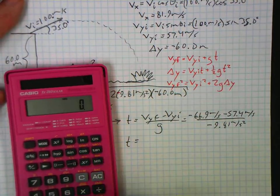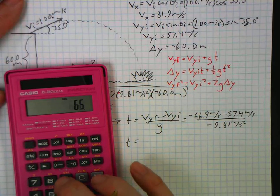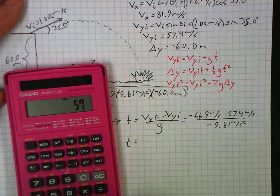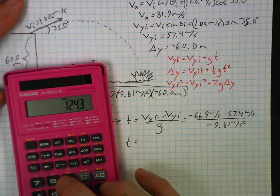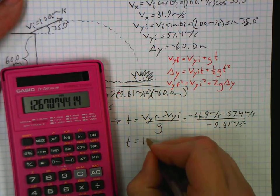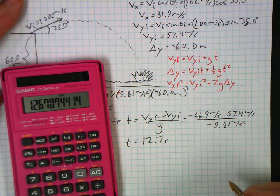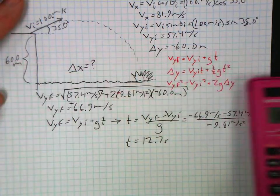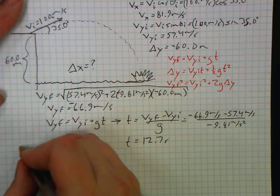So I didn't imagine things—it's not going to be an imaginary number or anything weird. 66.9 plus 57.4 divided by 9.81. I've already taken all the negatives out in my head. 12.7 seconds. That's a lot of time to be in the air.